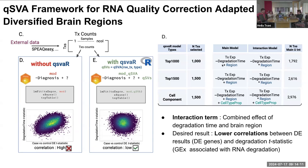We applied three different models. The main model adjusts for degradation time and region. The interaction model looks at the combined effect of degradation time and brain region. We selected the top significant 1,000 transcripts, and for one model took the union of the top 1,000 from the main and interaction models. For the top-1500 model we selected 1,500 transcripts instead. The cell component model adjusts for cell type proportions obtained from deconvolution analysis.